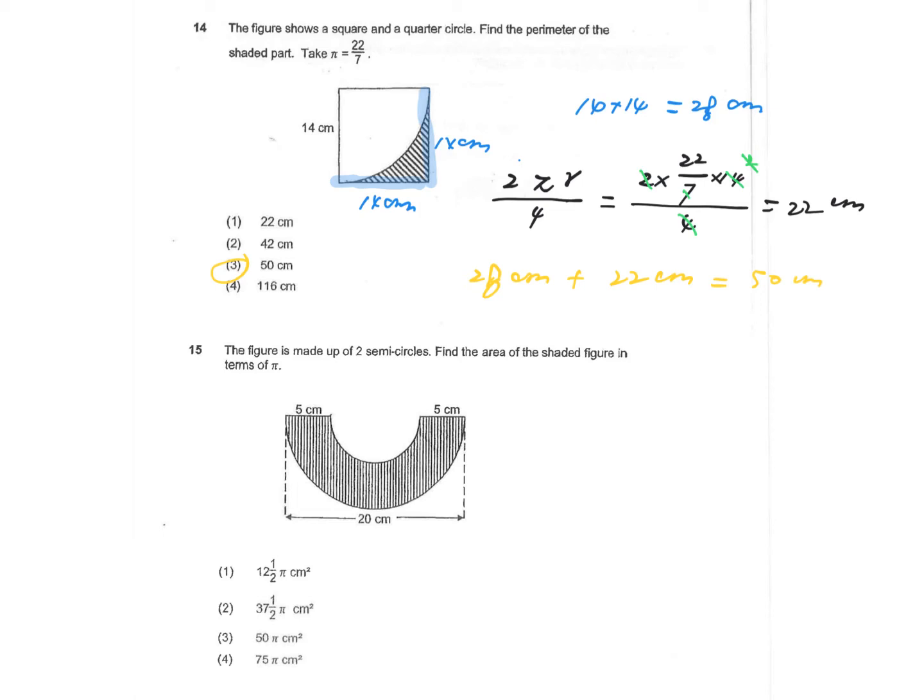Question 15. The figure is made up of 2 semicircles. Find the area of the shaded figure in terms of pi. So you can see there are 2 semicircles, and the shaded area is essentially a big semicircle minus the small semicircle in the center.